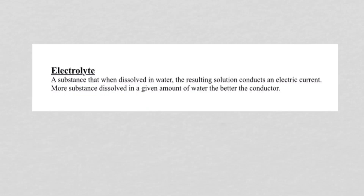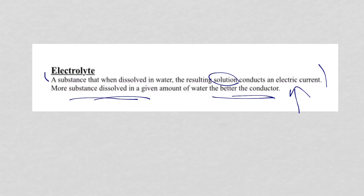Number three: electrolyte. Electrolytes are substances that, when dissolved in water, produce a solution that conducts an electric current. The more substance dissolved in water, the better the conductor. Electrolytes include salts, acids, and bases that dissolve in water. Make sure you know the word electrolyte and what it means.